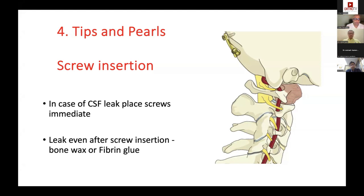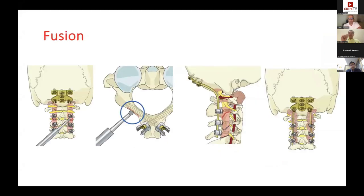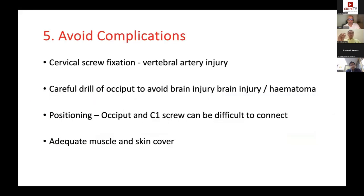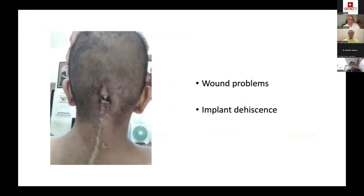Prepare the fusion bed before inserting the rod and the full construct — once the rod is placed you cannot prepare it well. Use a generous amount of bone graft, as one of the commonest reasons for failure at OC fusion is an inadequate fusion mass. You cannot rely just on the hardware construct alone.